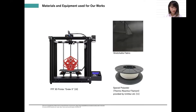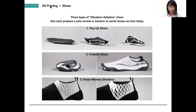These are the materials and equipment we use for our works: FFF 3D printers such as the Ender 5, stretchable fabric, and a special polyester called thermoreactive filament that has shape memory functions. This special polyester softens at around 45 degrees Celsius and solidifies when cooled down. It can be softened and reshaped easily post-production using a hair dryer or warm water, and can be printed using typical FFF 3D printers. With these equipment and materials, we created three types of situation-adaptive shoes: one, pop-up shoes; two, foldable shoes; and three, shape memory shoelace.